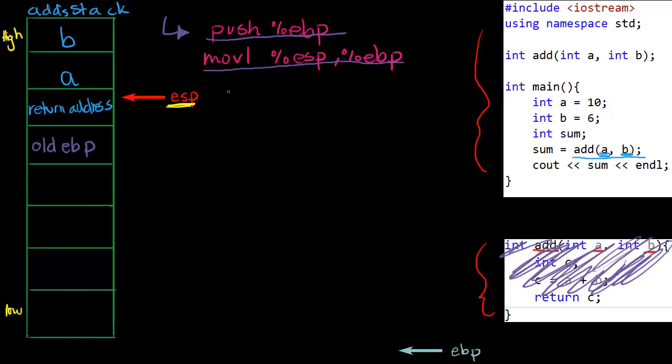We know that ESP has got to keep pointing to the top of the stack. So ESP's got to move down. ESP won't be up there anymore; ESP will actually be down here now. Let me draw it in red. ESP will be down here now pointing at this old EBP spot. So that's what happens on this line right here, this line.